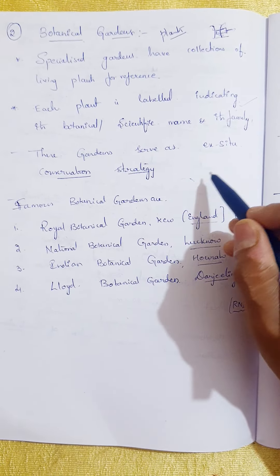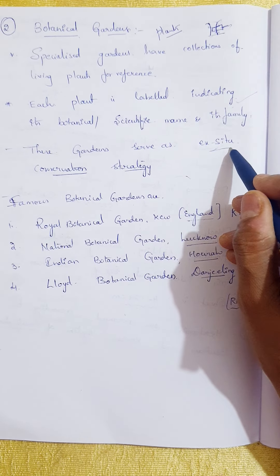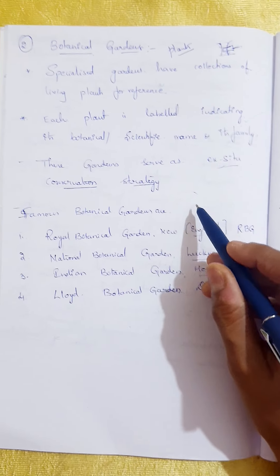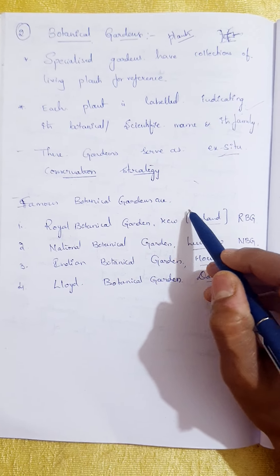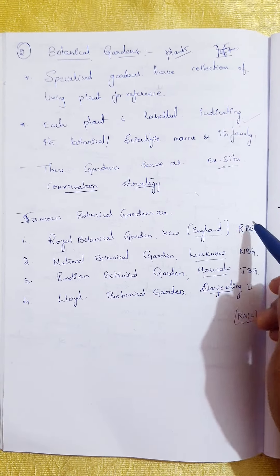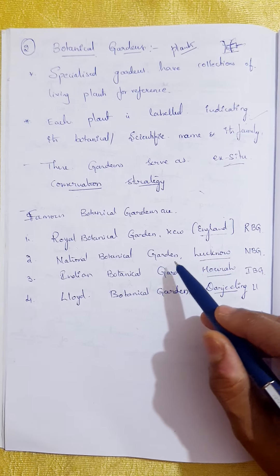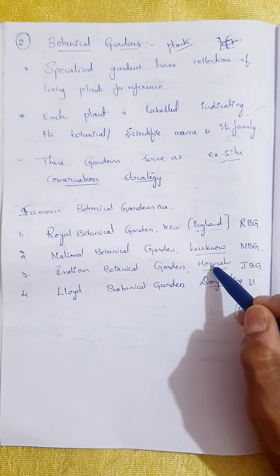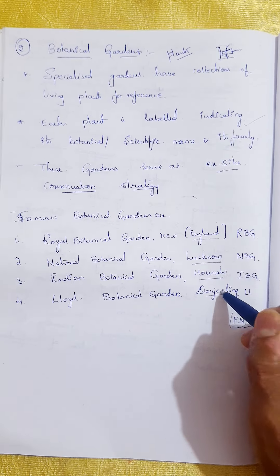This garden also serves as an ex-situ conservation strategy. Ex-situ means outside the natural environmental conditions — you are protecting the organisms under human care. Famous botanical gardens include the Royal Botanical Gardens located in Kew, England; the National Botanical Garden in Lucknow; the Indian Botanical Garden in Howrah; and the Lloyd Botanical Garden in Darjeeling.